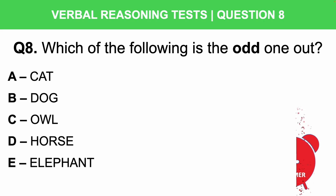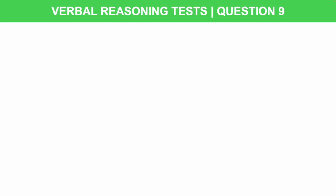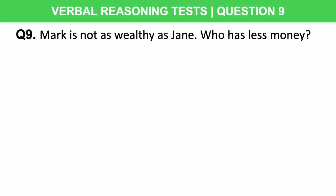Let's continue with verbal reasoning practice but look at a different type of question. Question 9: Mark is not as wealthy as Jane — who has less money? Is it Mark, Jane, or both the same? Just three seconds to answer this quick-fire question — let me know your answer below.